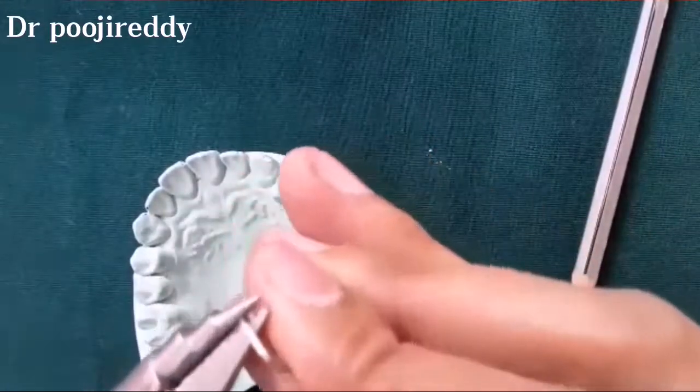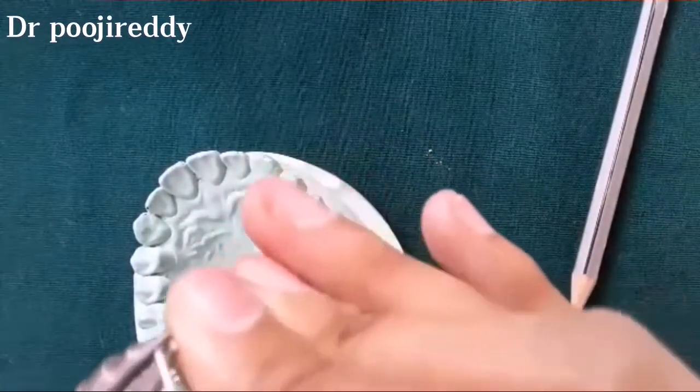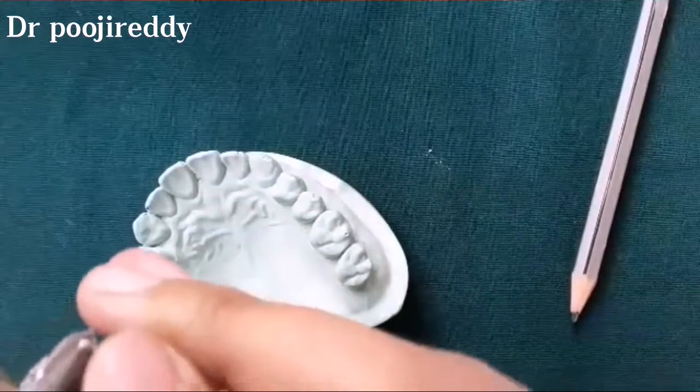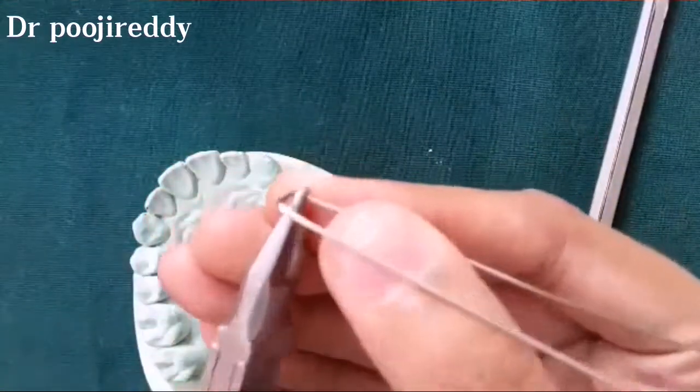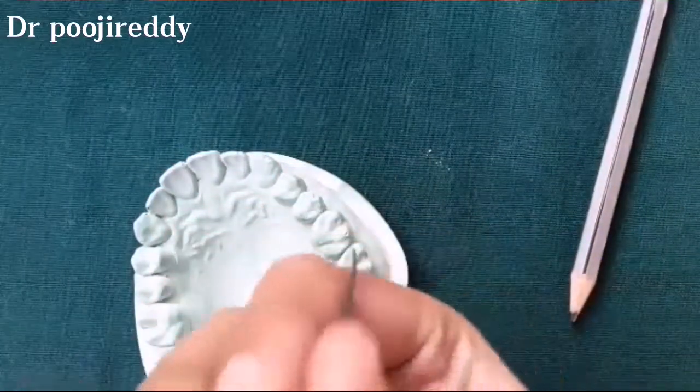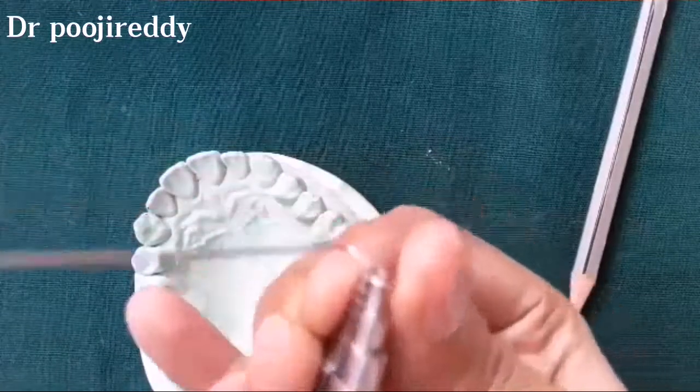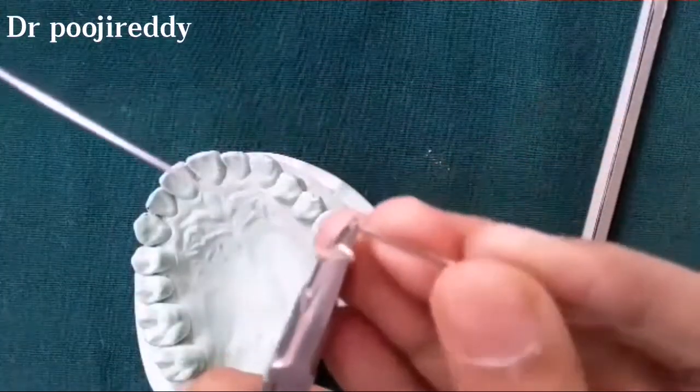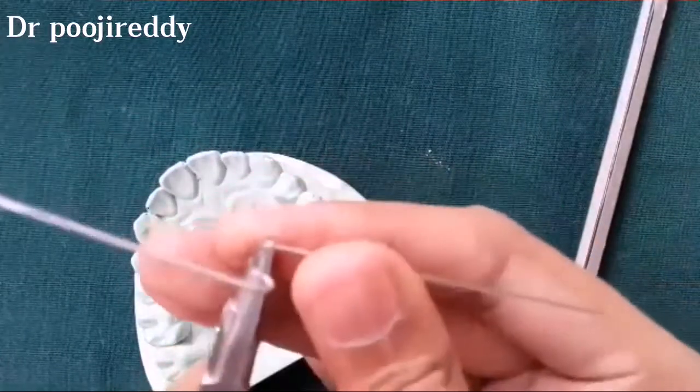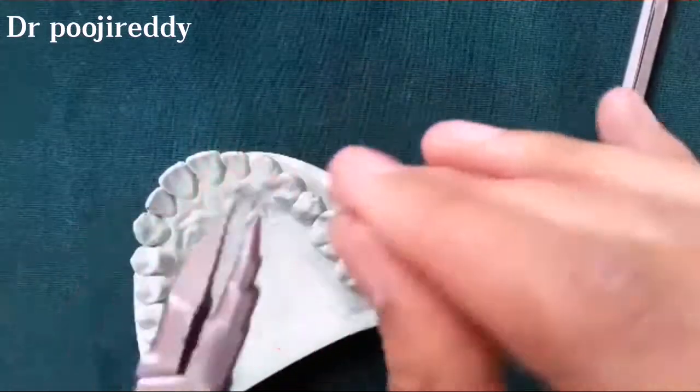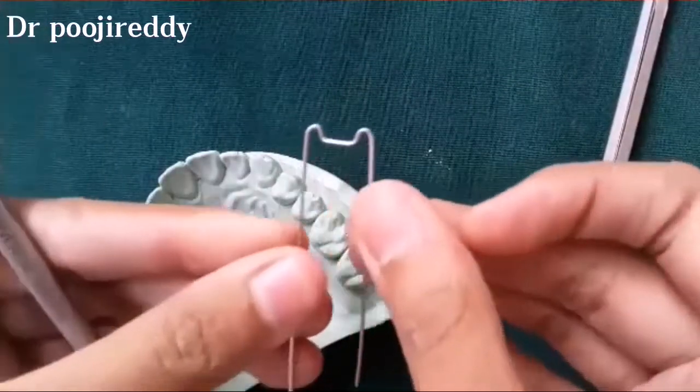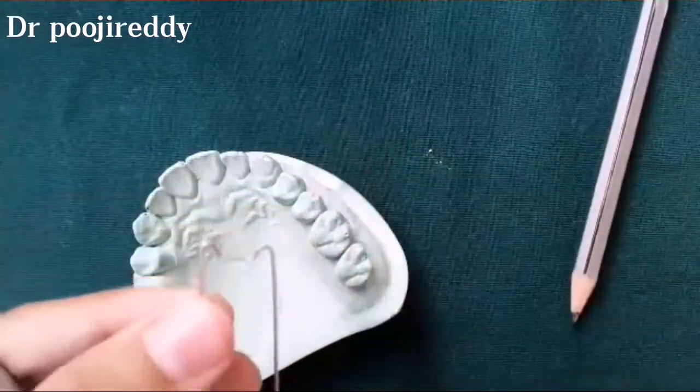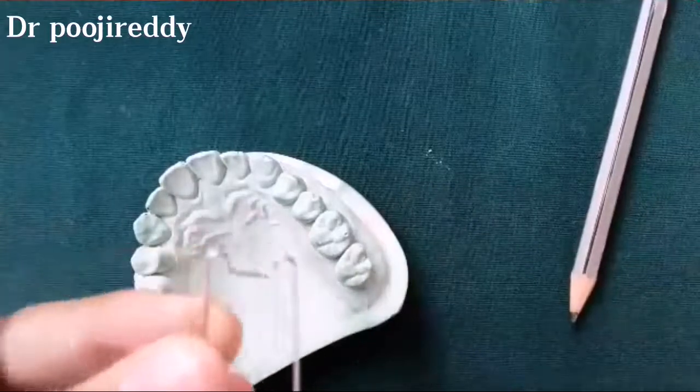And now the beak of the universal plier is placed on the outer side close to the bridge of the Adams clasp and bend with the round beak, round side of the universal plier. Surround the orthodontic wire around the round side of the universal plier so that the wire will be bent in the shape of U, and this forms the arrowhead.